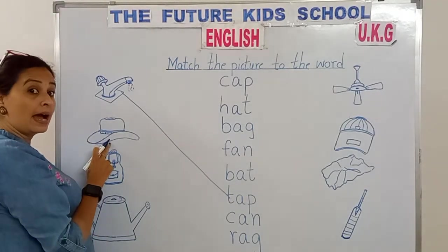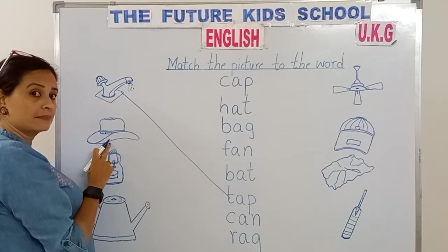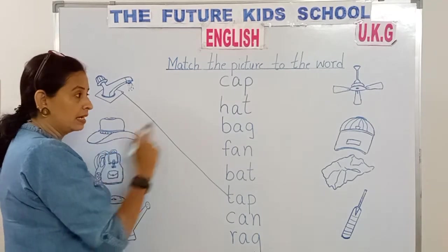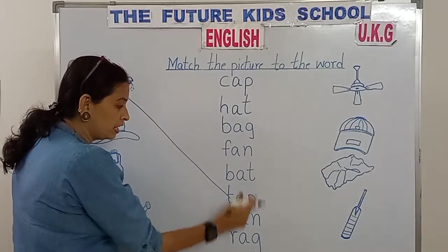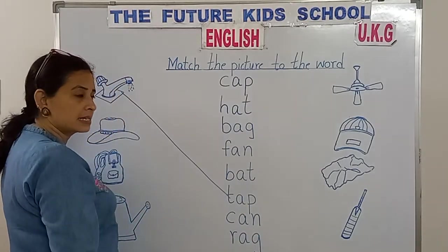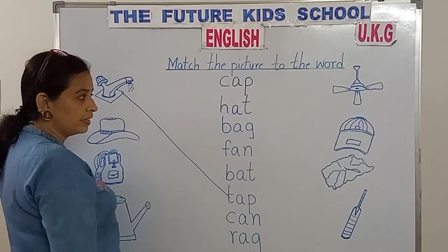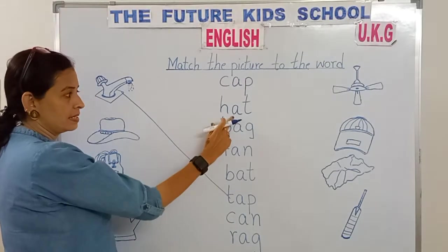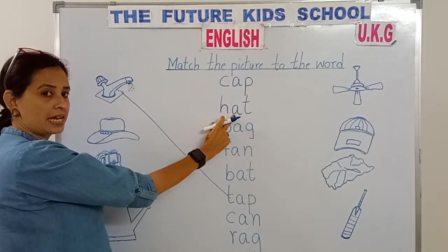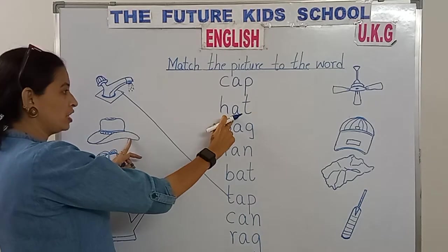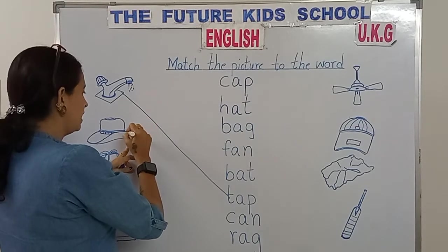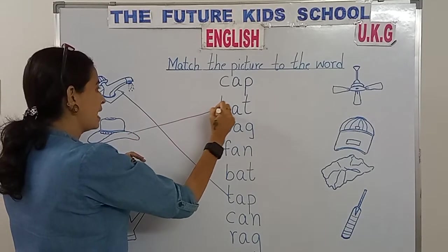This is a hat. H-A-T spells hat. Now let's see where's the word over here. H-A-T hat. Can you show me? Yes, here is the word H-A-T hat. So match the picture hat to the word H-A-T hat.